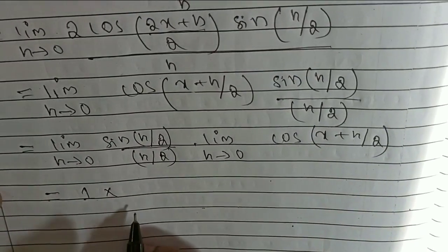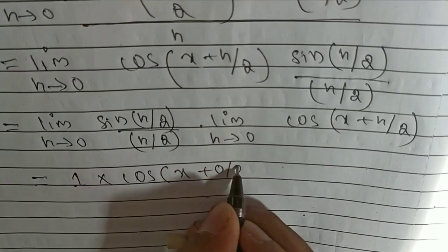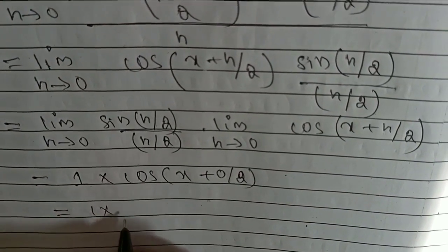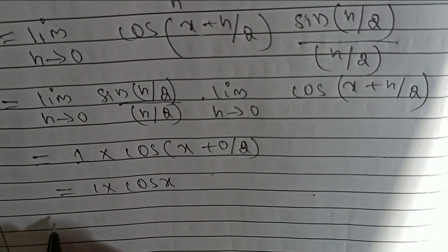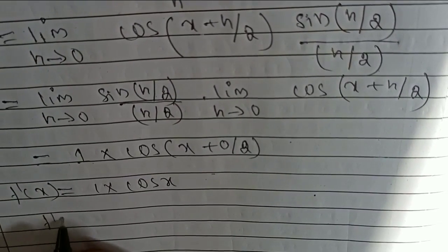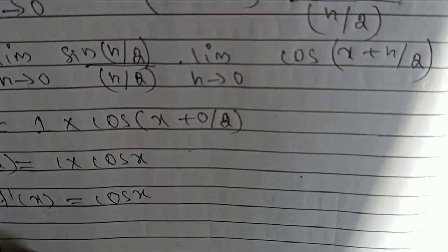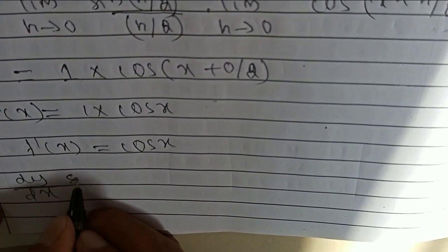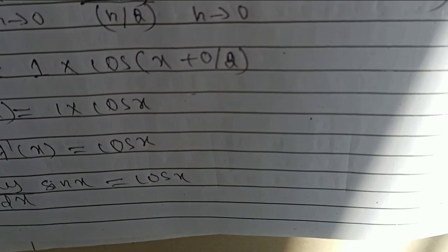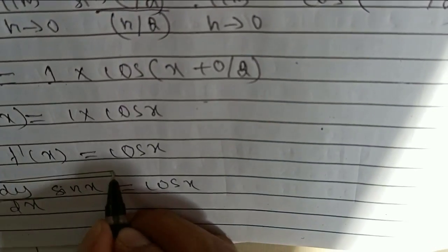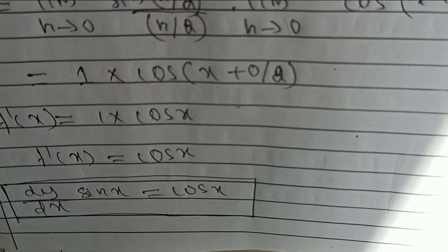1 into now I will apply the limit, that is cos of x plus 0 by 2, 1 into cos x. It is f'(x) is equal to cos x from the first principle. That is dy by dx of sin x is equal to cos x. We find out the derivative of sin x by using the first principle.